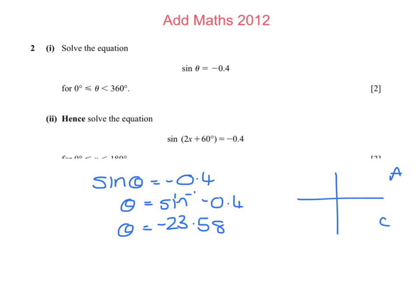If I draw a cast diagram, I can see that this angle is here and the other place that sine is negative is here. So that gives me two solutions. Remember we've got to look at the range here. I'm going from 0 to 360.